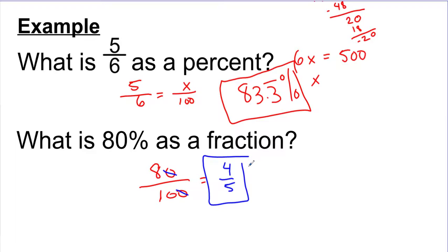So 80% is the same as 4 fifths. 83.3% is the same as 5 sixths. If you really understand what a percent is, these are pretty straightforward. Make sure the denominator equals 100 and you have a percent. Take this number and put it over 100 and you have the fraction.